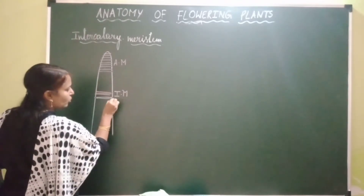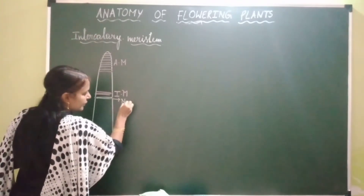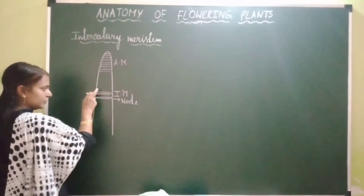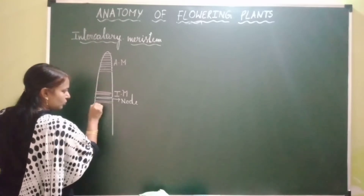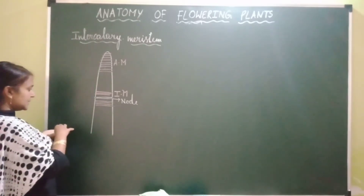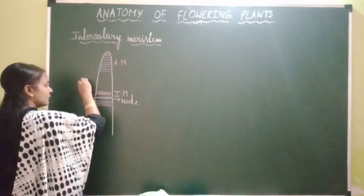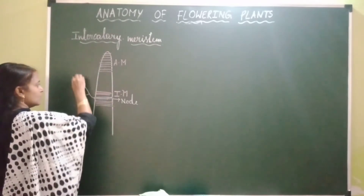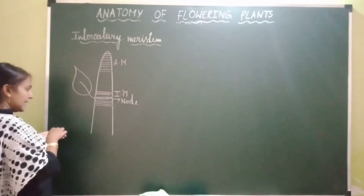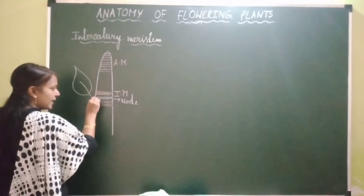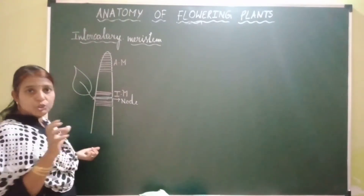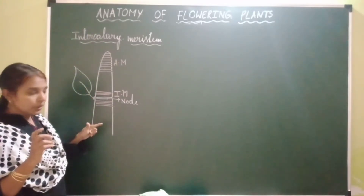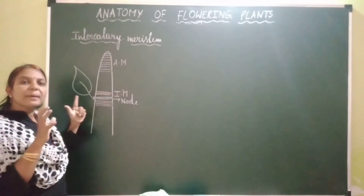Let's say this is the node of the stem. The intercalary meristem can be present above the node or below the node, or it can be present at the base of the leaf. At the node, a leaf is present, so it can be present even at the base of the leaf. So the position of this intercalary meristem can be above the node, below the node, and at the base of the leaf.